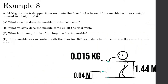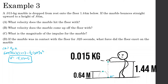Example: a 0.015 kilogram marble is dropped from rest onto the floor 1.44 meters below. Using conservation of energy — potential energy equals kinetic energy — 0.015 × 10 × 1.44 = 0.5 × 0.015 × v². The 0.015 cancels, giving v = √(2 × 14.4) = 5.37 meters per second. So the marble hits the floor at negative 5.37 meters per second (downward).